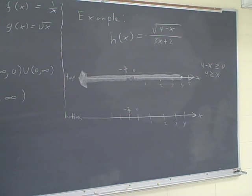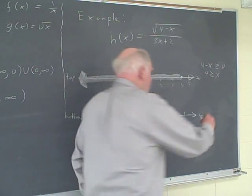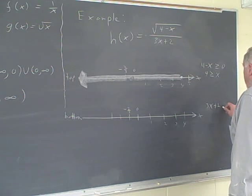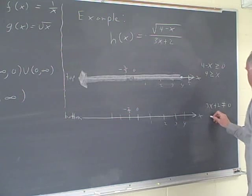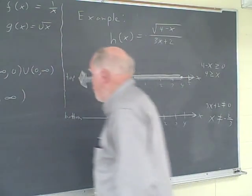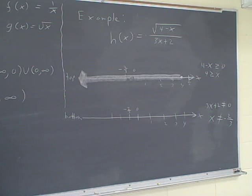Now on the bottom, this 3x plus 2 can't equal 0. So I'll analyze this function alone. 3x plus 2 cannot equal 0. That means that x cannot equal negative 2 thirds, because if it is negative 2 thirds, this whole expression will be 0, and I'll have 0 in the denominator, and you're not allowed to have division by 0.